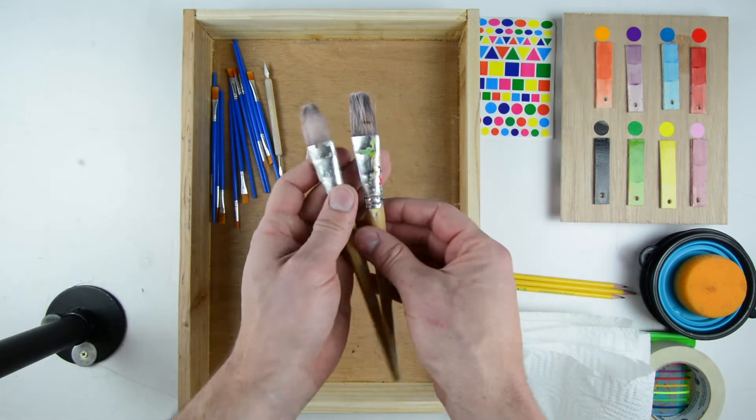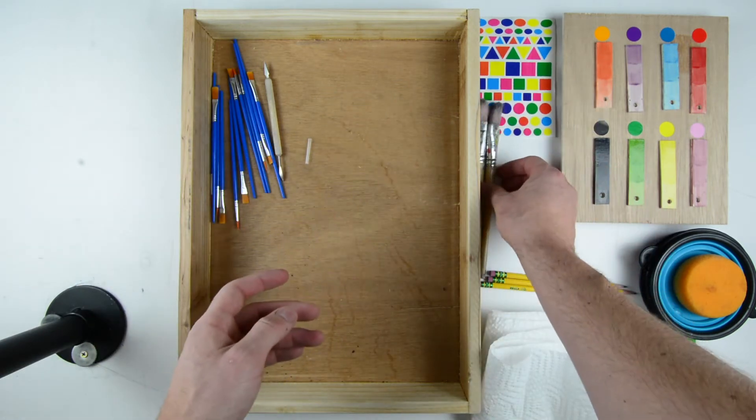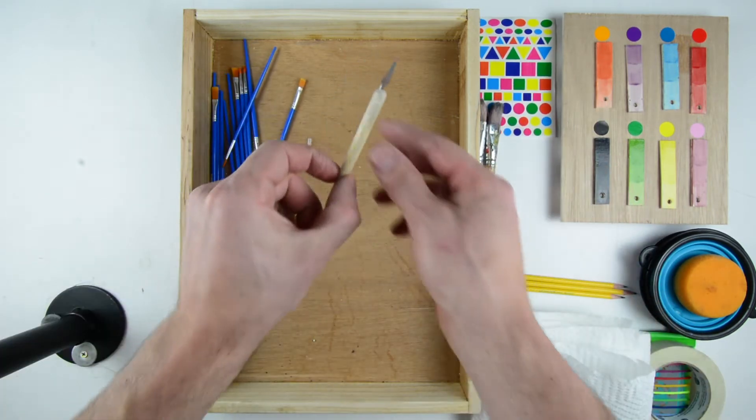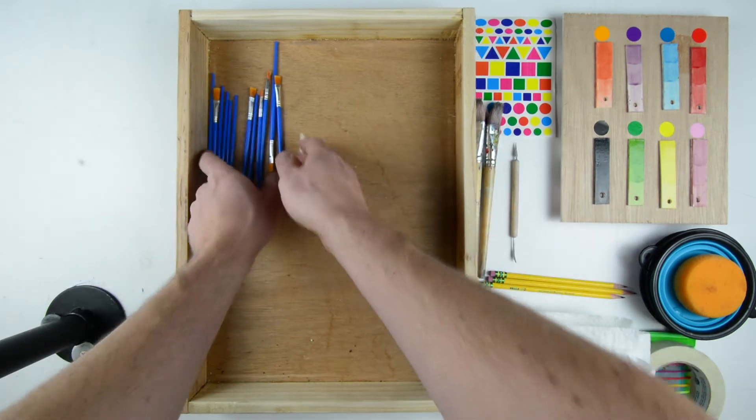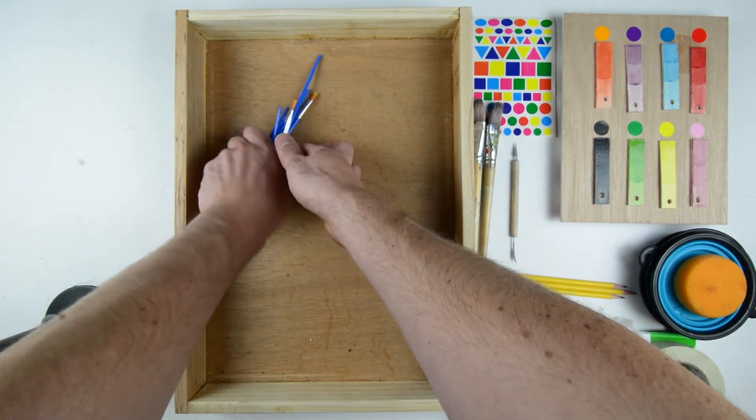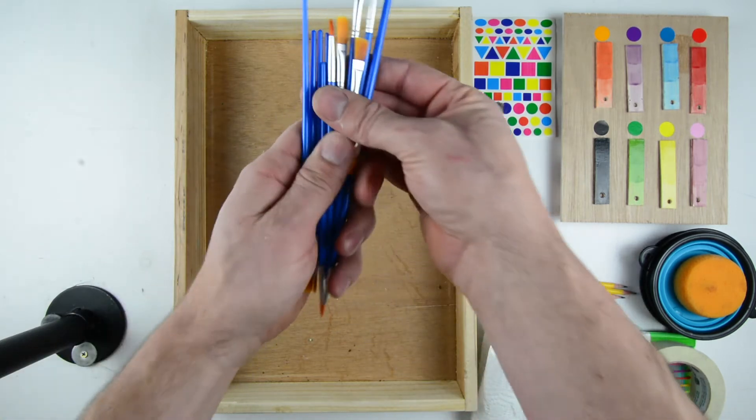Large brushes for painting large areas of your piece, a knife tool to peel off stickers and masking tape, and finally a small flat brush and round brush for painting more detailed designs.